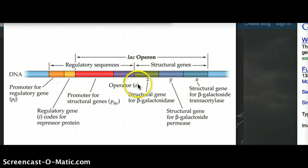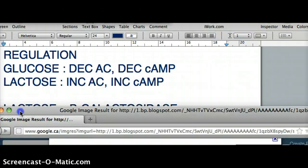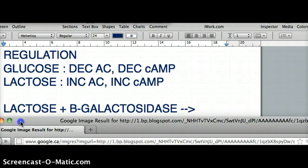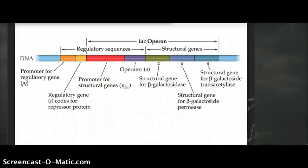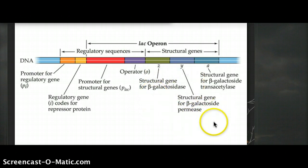When the structural genes are not stimulated, beta-galactosidase is not produced, and we cannot break down lactose. The structural genes are Z, Y, and A: Z codes for beta-galactosidase, Y codes for permease, and A codes for beta-galactosidase transacetylase — so these are different enzymes involved in lactose metabolism.